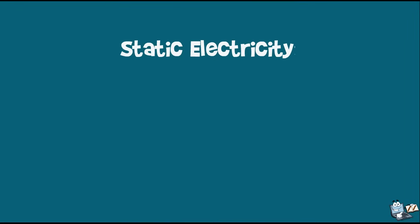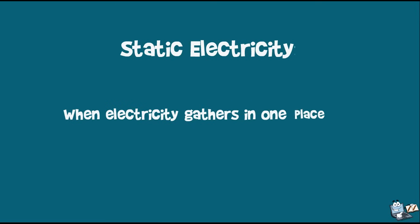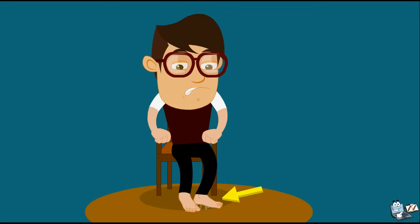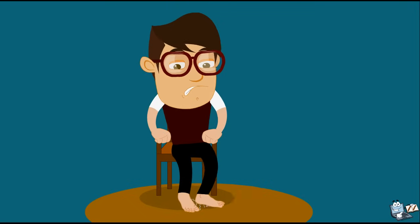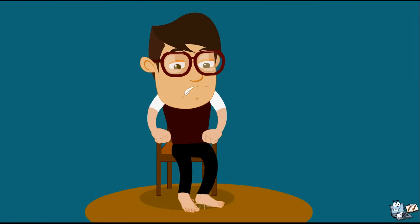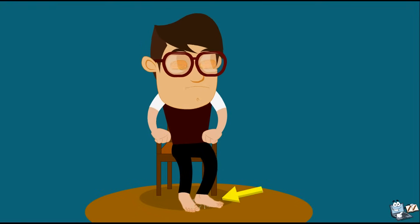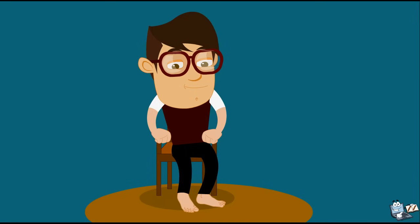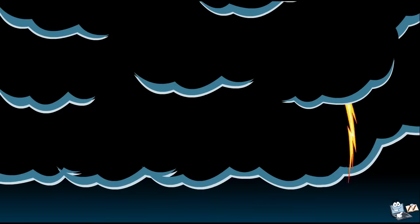Static electricity: when electricity gathers in one place, it is called static electricity. For example, when you rub your feet on a carpet and then zap something when you touch it, it is static electricity that you have built up on the surface of your skin, discharging onto another object. Lightning is also a powerful example of static electricity.